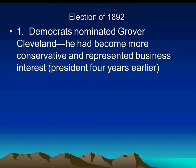Welcome back to AP U.S. History. This is part two of chapter 20. We've been talking about the populist movement, the populist party. It certainly had a lot of support in the West. Farmers were looking for a political solution to their problems against the eastern establishment.